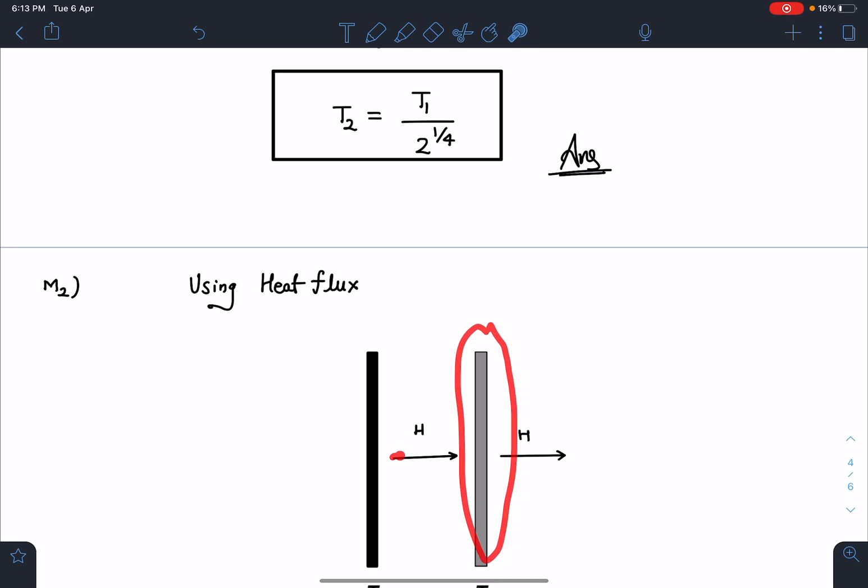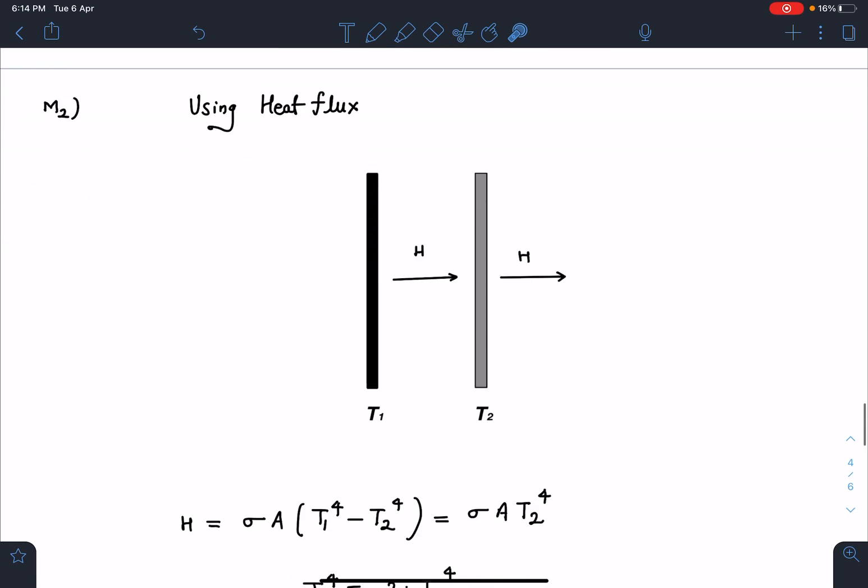The heat flux from here will be σA(T₁⁴ - T₂⁴), and leaving will be σA·T₂⁴. When we do this, I'm going to get σA—if I cancel out σA...